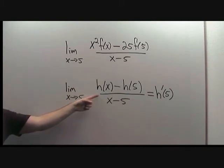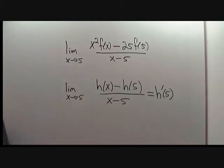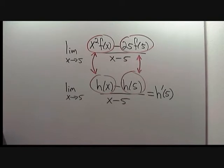Our final goal is to rewrite the original limit in this form. Let's match up terms to identify the good choice for function h. Looking at the first term, we see x squared times f of x should match up with h of x. Looking at the second term, we see 25 f of 5 should match up with h of 5. Therefore, our guess will be h of x equals x squared times f of x.